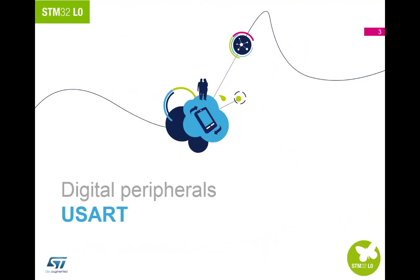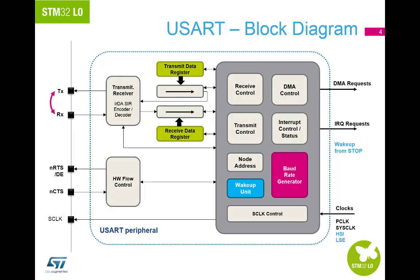Let's start with the communication peripherals that can wake the device from stop mode. Firstly, the USART. The block diagram for the USART shows some new features compared to the existing USART in the STM32 family. We have the wake-up unit to wake the device from stop mode, and the ability to load the data register as soon as the previous byte has started transmission from the shift registers. The peripheral can now be clocked from a new source — LSE, Low Speed External — as well as the HSI. And the RX and TX pins can be swapped.